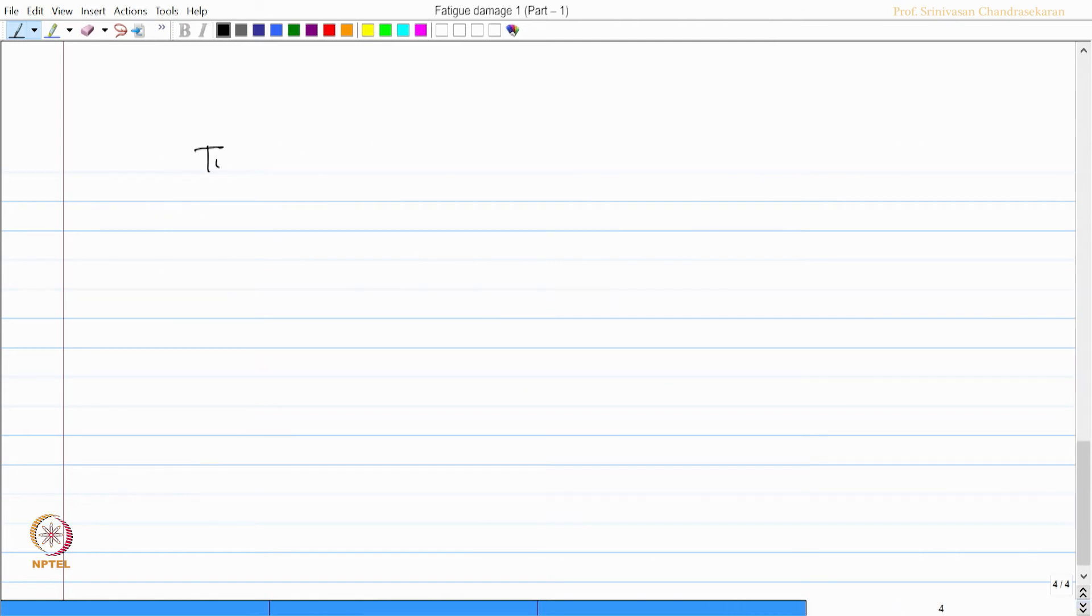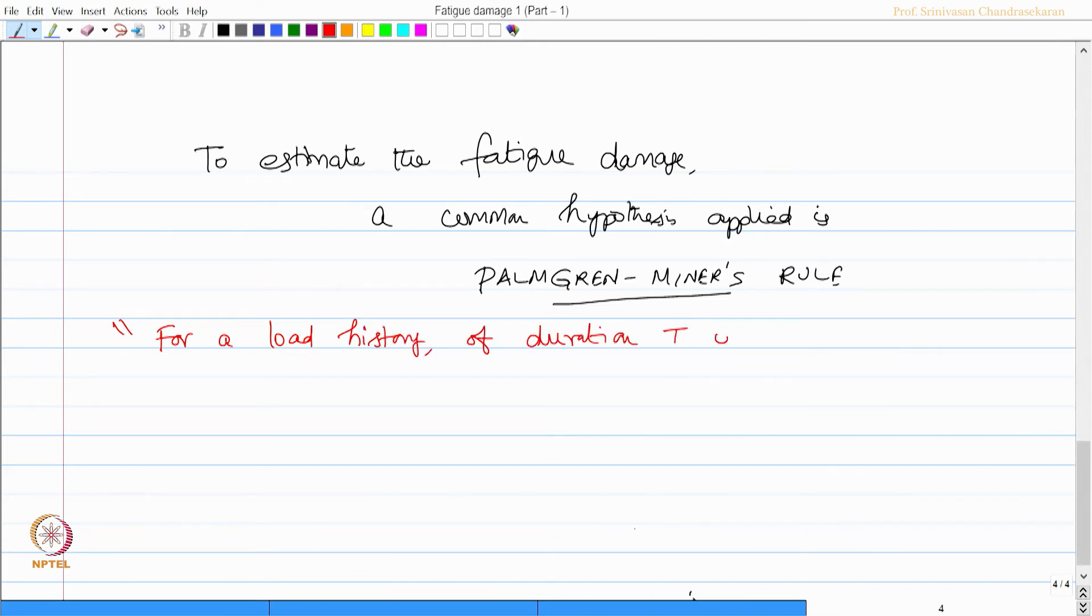We will talk about this slightly later in more detail. To estimate the fatigue damage, a common hypothesis applied in the literature here is Palmgren-Miner rule. What is the rule state?